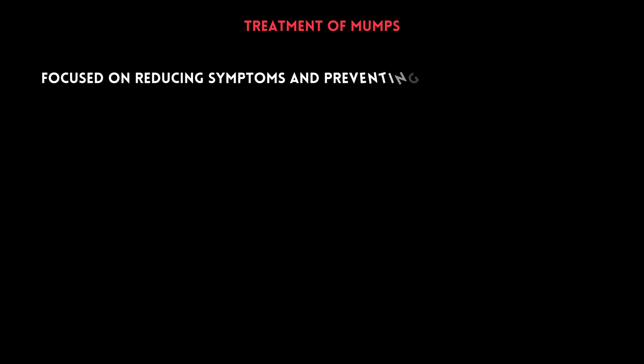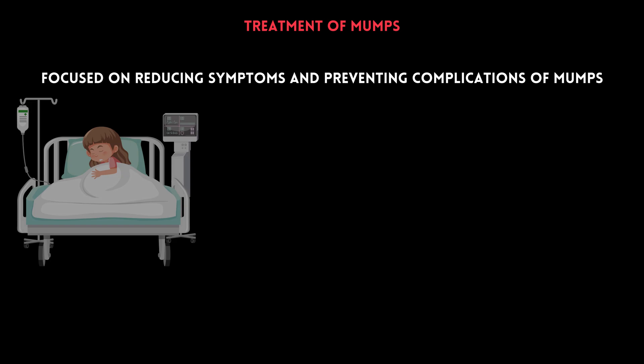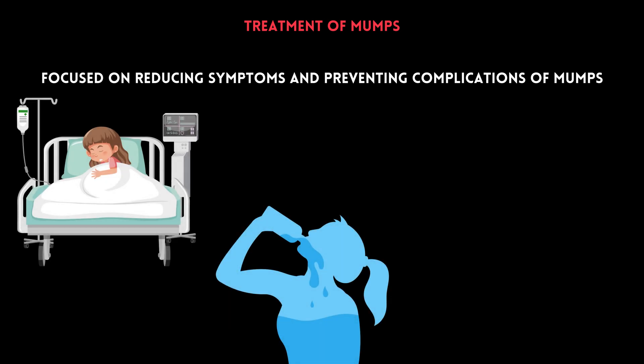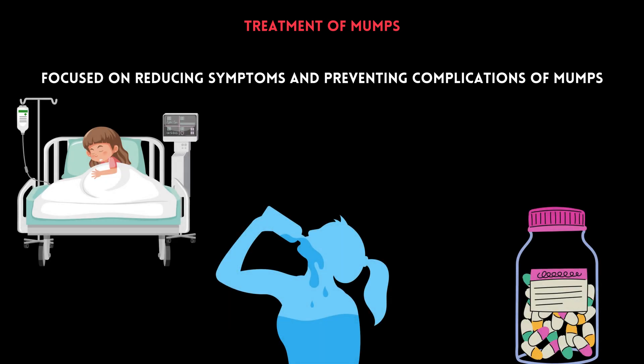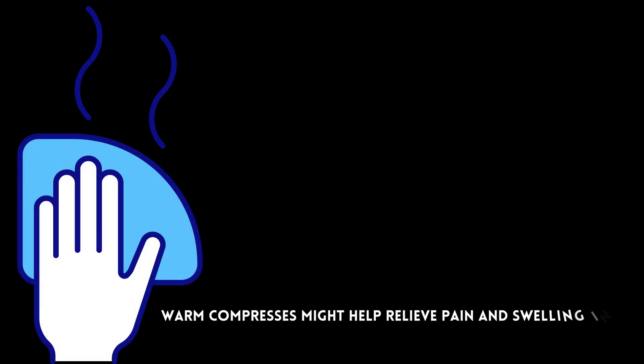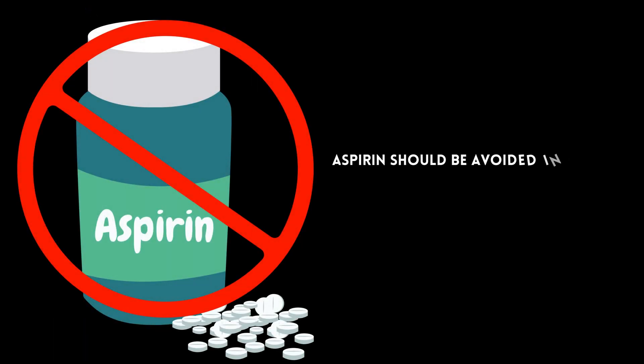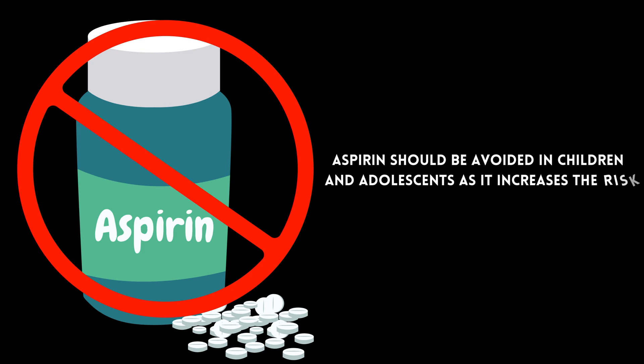Treatment of mumps is focused on reducing symptoms and preventing complications. Some general measures include bed rest, adequate hydration, pain relief, and soft diet. In addition, warm compresses might help relieve pain and swelling in the parotid glands. It is important to keep in mind that aspirin should be avoided in children and adolescents as it increases the risk of Reye's syndrome.